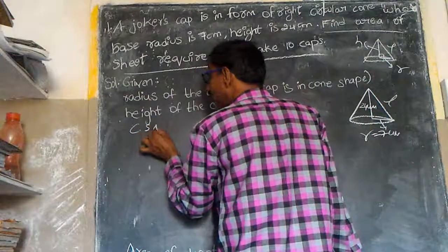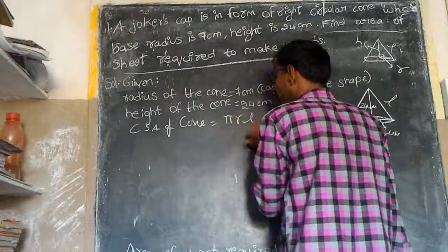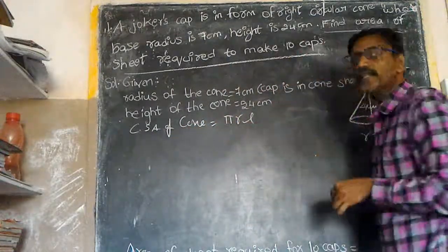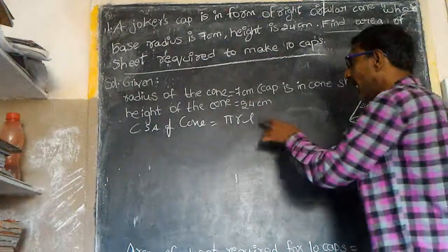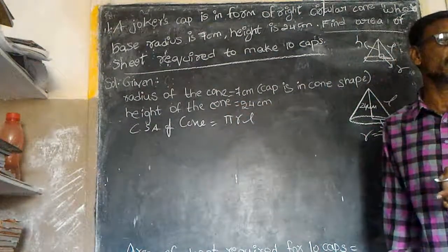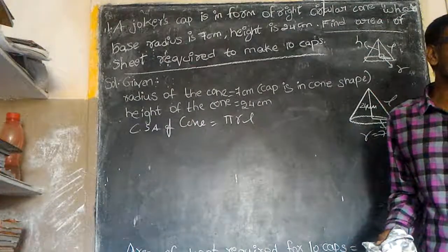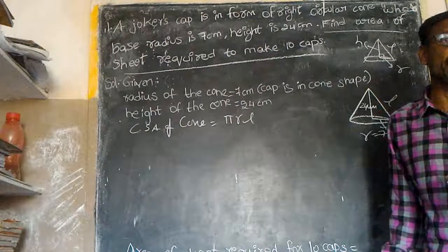You can use the curved surface area of the cone. Curved surface area of cone is equal to πRL, where L is the slant height. Curved surface area of cone is nothing but the sheet required to make a cap.